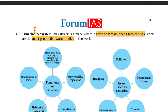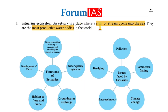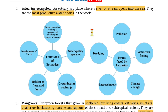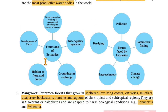Moving on to estuary ecosystems — an estuary is a place where a river or stream opens into the sea. They are the most productive water bodies in the world. Functions of estuaries include water quality regulation, groundwater recharge, habitat for flora and fauna, development of ports, and storm protection by acting as sponges absorbing storm impact. Issues faced by estuaries include commercial fishing, climate change, encroachment, dredging and pollution.